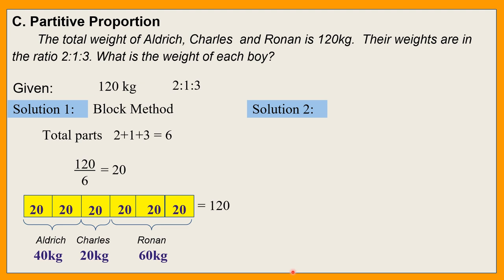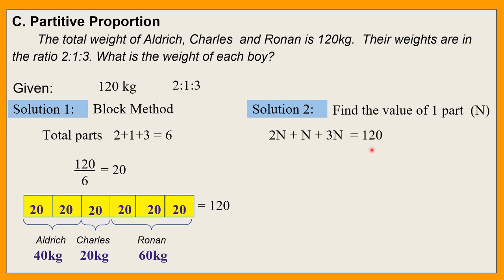So yung solution 2 natin, kukuha tayo ng value ng isang part. I-represent natin ito as N — one part with N. So kung N yan, 2 parts ay 2N, 1N, three parts is 3N. So i-add mo lang yan: 2N plus 1N plus 3N and that is equal to 120.